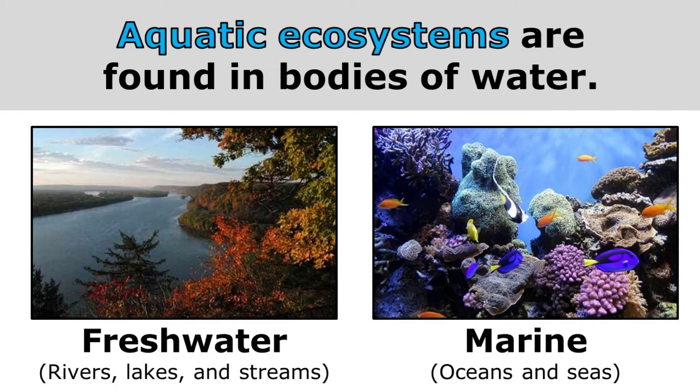Aquatic ecosystems are found in bodies of water. That could be a freshwater ecosystem like rivers, lakes, and streams, or a marine ecosystem like oceans and seas.